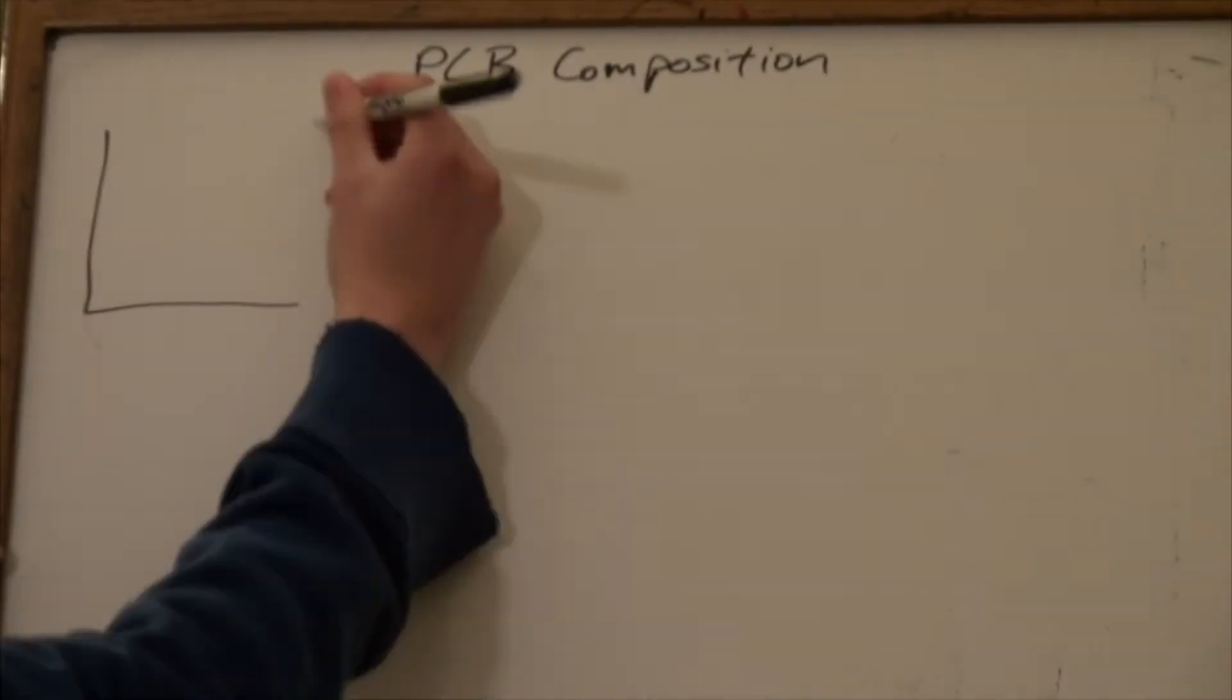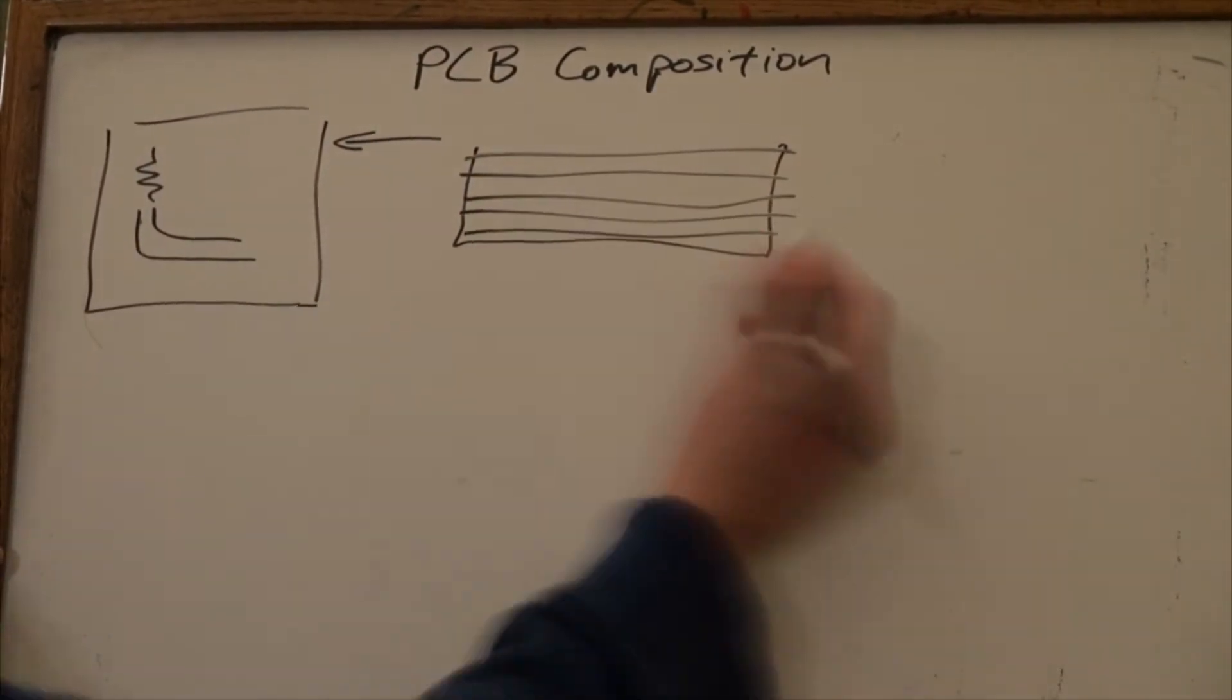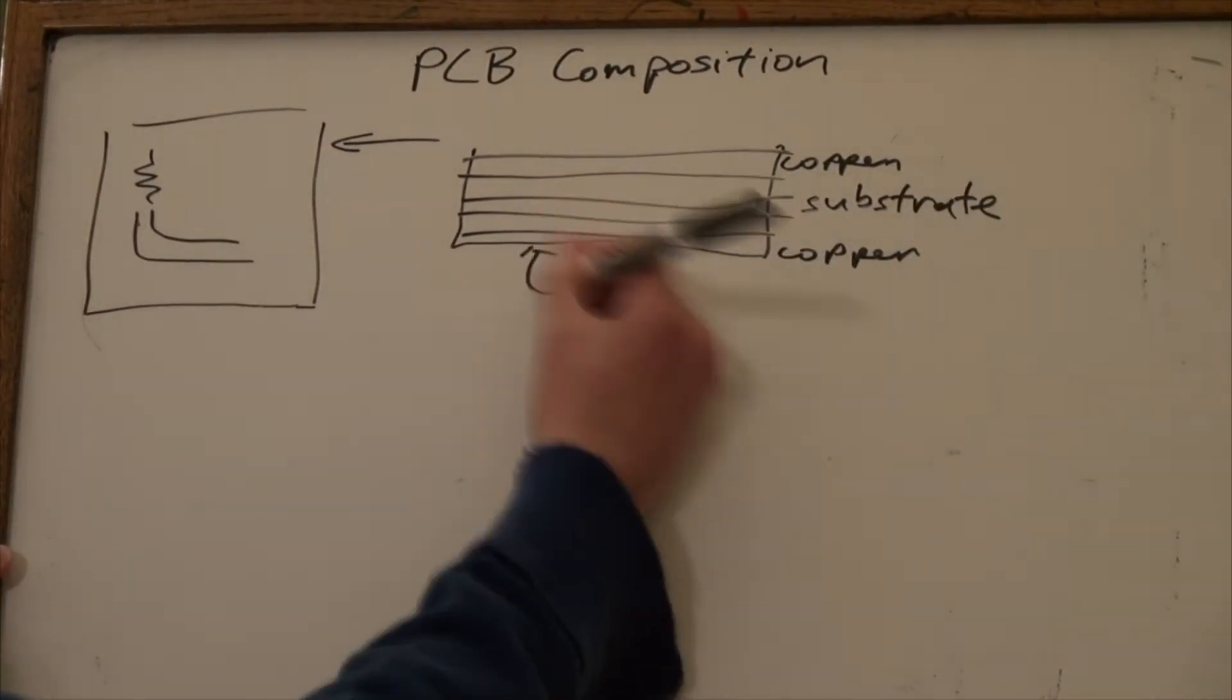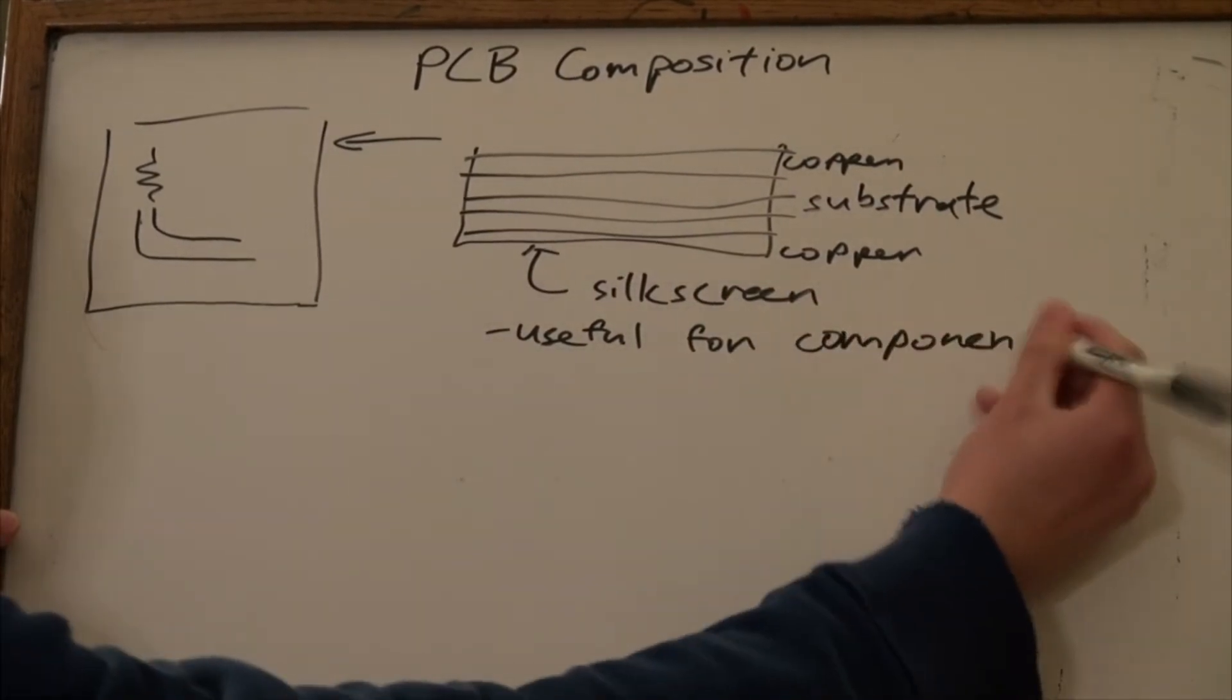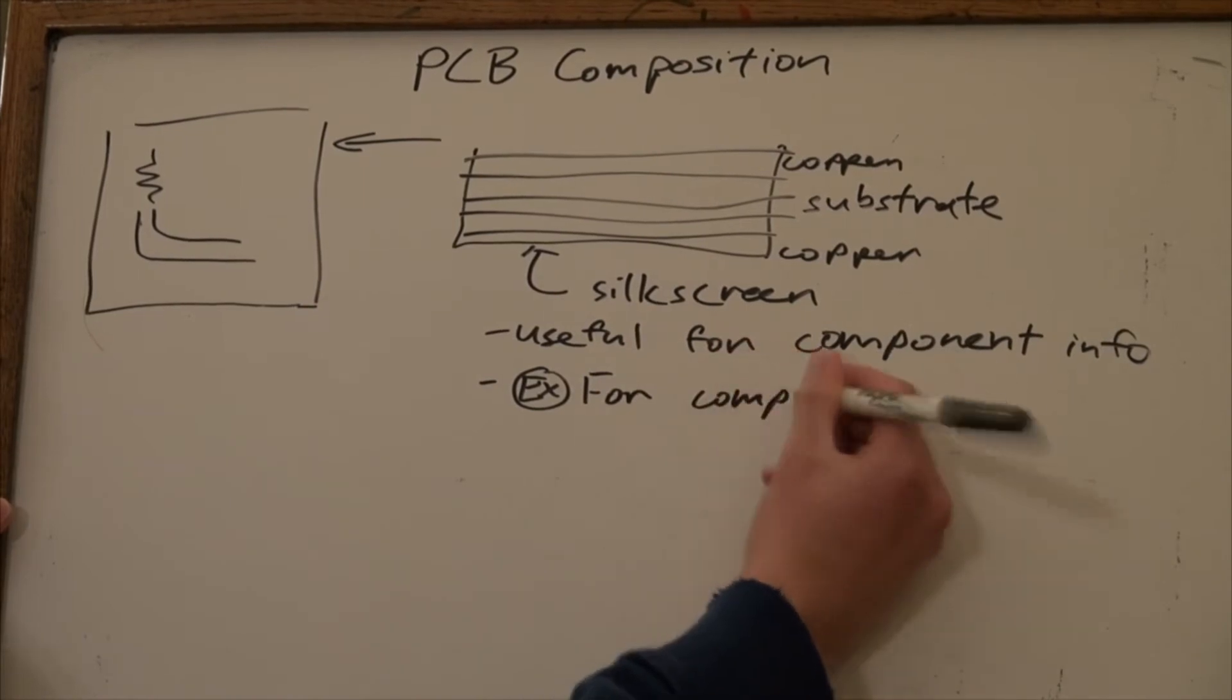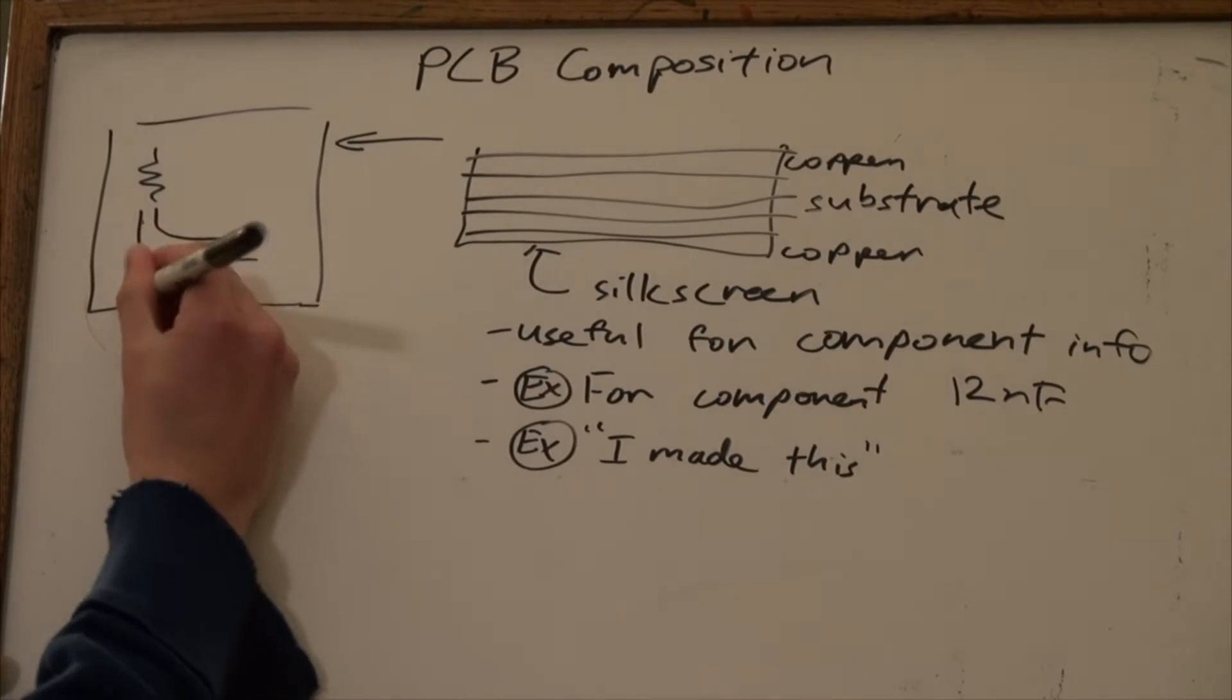PCBs can have multiple layers on them, leading to intricate connections. These layers are made of copper to conduct electricity and substrate to bind them together. A silk screen is used to etch important markings on the board for information. Some other features you can find on PCBs include vias and pads, which depend on the component you use for the PCB.